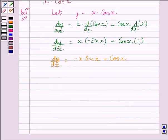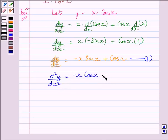Now, again differentiating both sides of equation 1 with respect to x, we get d²y/dx² is equal to minus x multiplied by cos x plus sin x multiplied by minus 1 plus minus sin x.